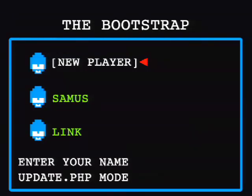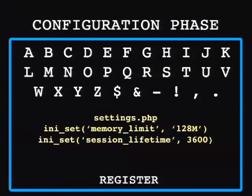The bootstrap is broken into seven distinct phases. First is the configuration phase - just like entering your name in a video game, that's a variable important to our request. The configuration phase sets up error handling, loads the settings.php file you've defined, and modifies some PHP variables - those ini_set calls you see when setting your memory limit and so forth. Two variables used later in the request are initialized here.